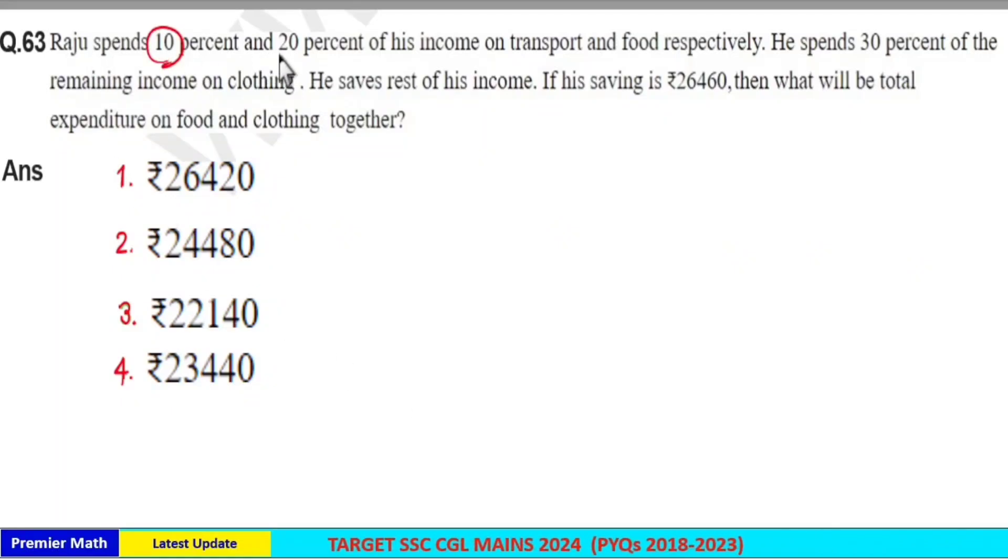Raju spent 10% and 20% of his income on transport and food respectively. He spent 30% of the remaining income on clothing. He saves the rest of his income. If his savings is ₹26,460, then what will be the total expenditure on food and clothing together?